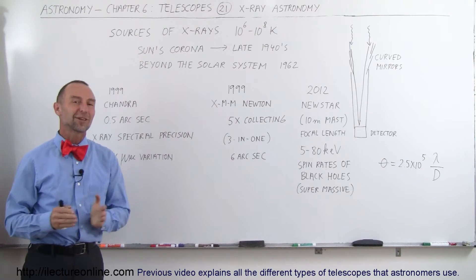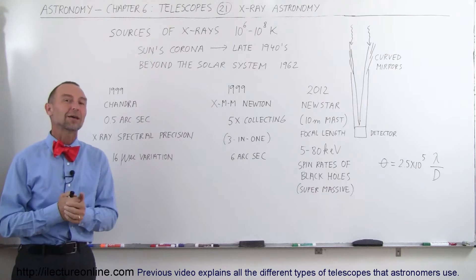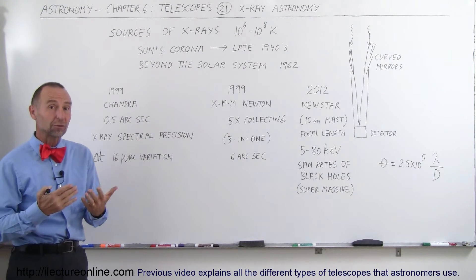Welcome to Electron Online and now let's take a look at X-ray astronomy. Of course, X-rays do not make it through the atmosphere in any way, shape or form. So the only way that we can observe X-rays is from space.